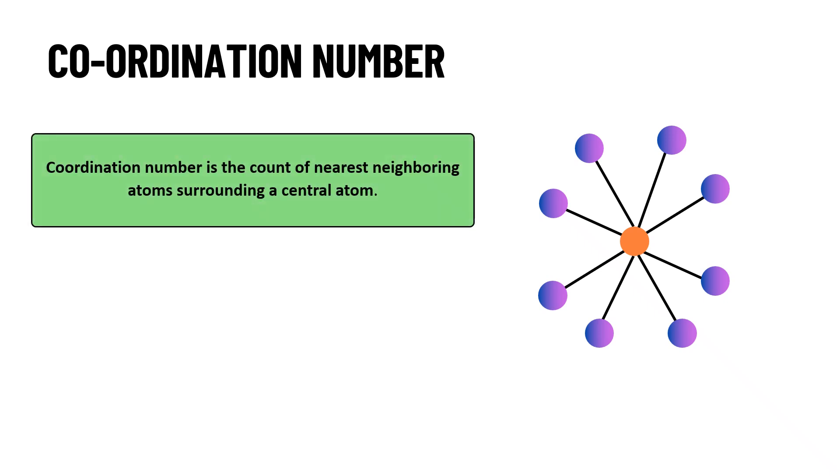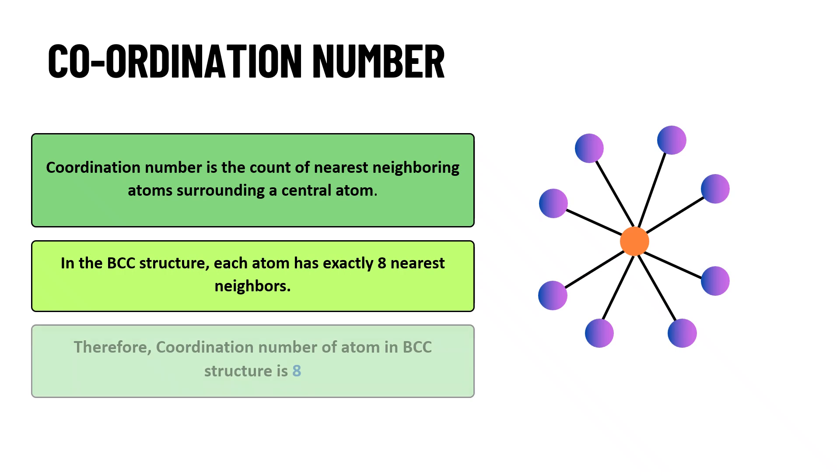If we talk about the BCC then a single atom is connected to 8 more atoms and therefore the coordination number of atom in BCC structure is 8.